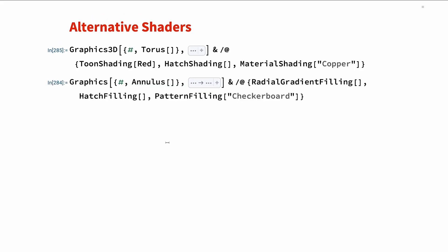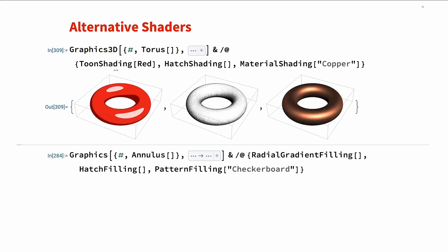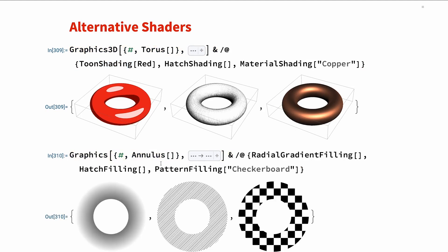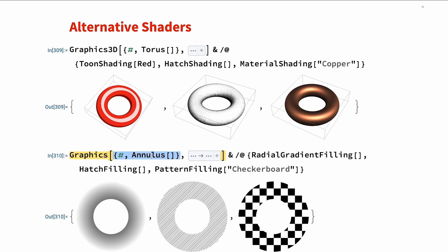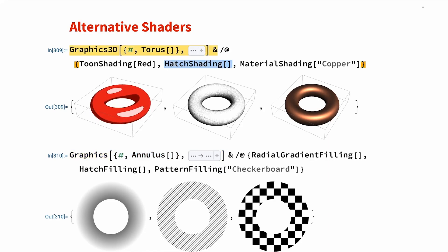Next up, we have alternative shaders. These are actually separate shaders from the standard one, running their own custom code on the GPU. Each one is meant to achieve a specific effect. We have the 3D ones called the shading symbols, and then the equivalent 2D ones called fillings. These are also customizable with parameters, as you can see with this red torus. However, they're still limited on how much you can do — they're not that flexible.